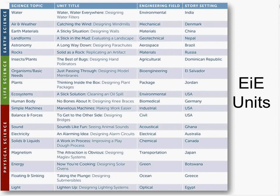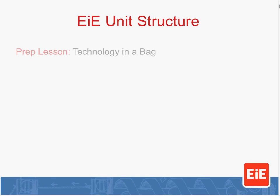We wanted to showcase the really broad range of things that engineers do in different fields — from civil and electrical engineering to smaller fields like bioengineering and optical engineering. We also wanted our units to integrate with other subject areas, since in most elementary schools teachers are teaching not just science and engineering but mathematics, literacy, and social studies. So we set the context for our units in different countries all over the world. Regardless of which of these 20 units a teacher is teaching, they all follow the same structure.